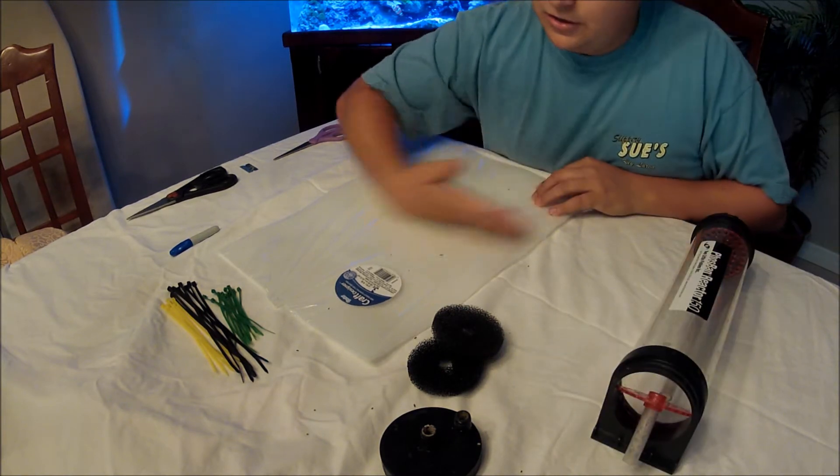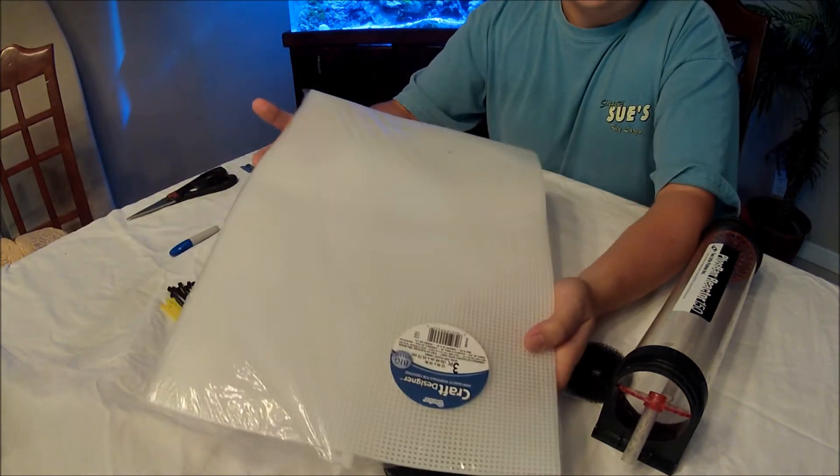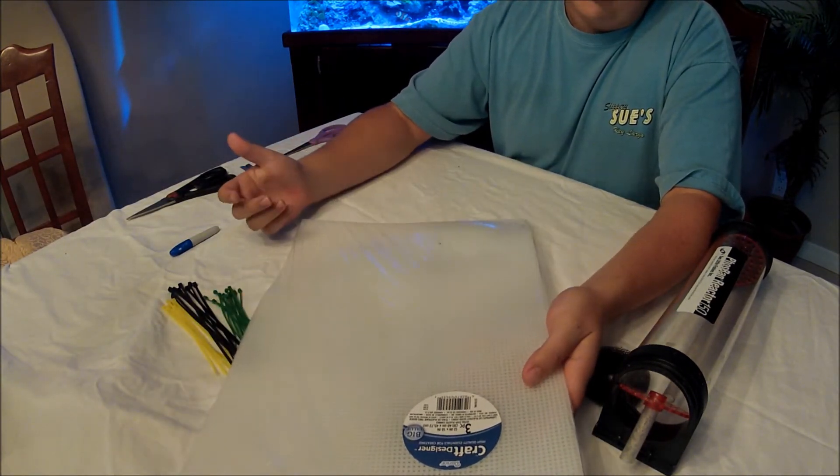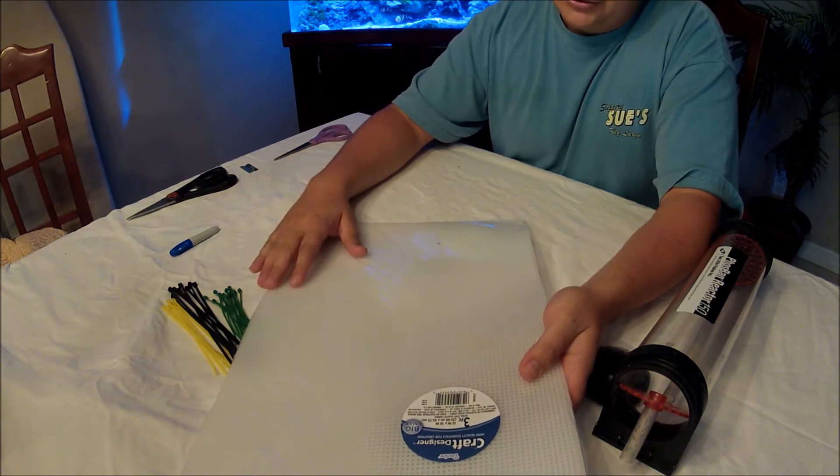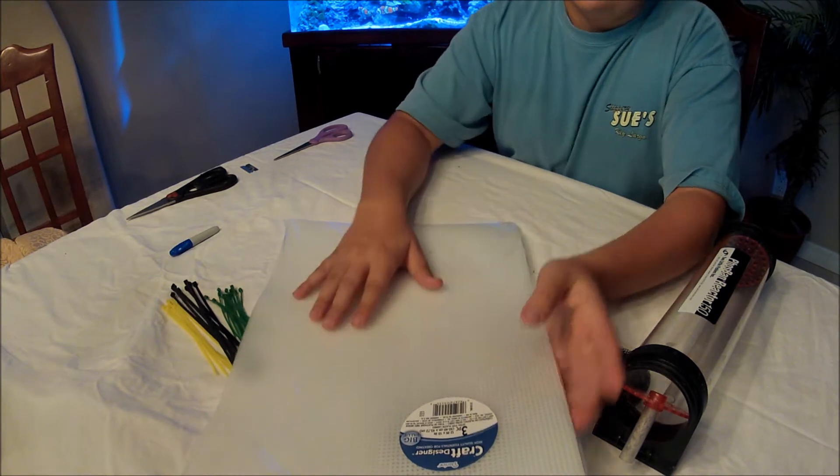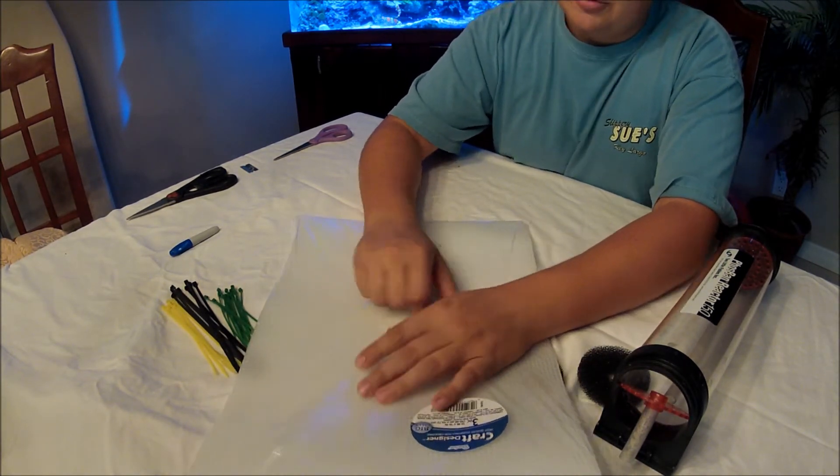I pretty much, instead of using these, I'm going to use this. This is made for like knitting, you can get it at Walmart, Michaels sells it too. And it's a plastic material. It's the same stuff that I use for my DIY algae scrubber as well.